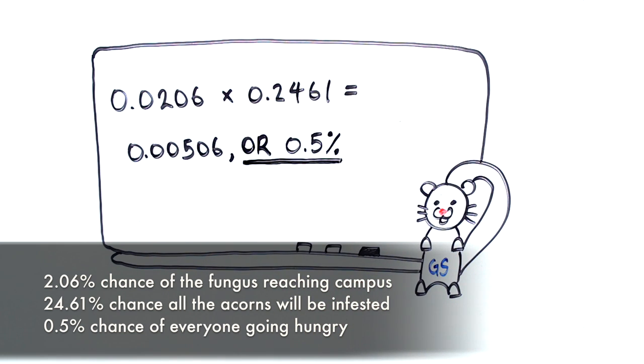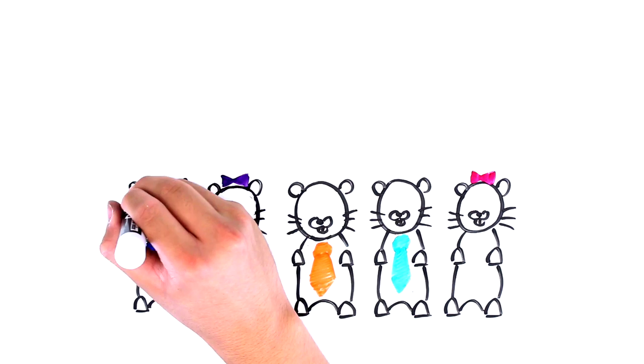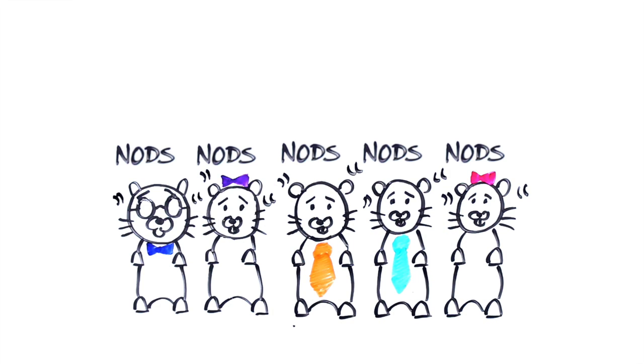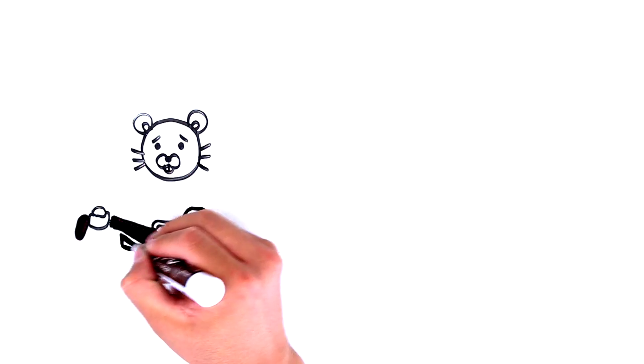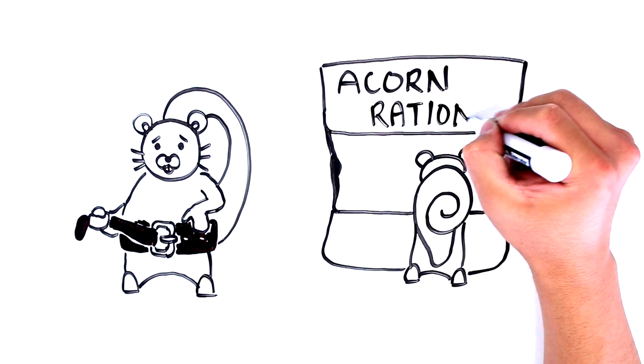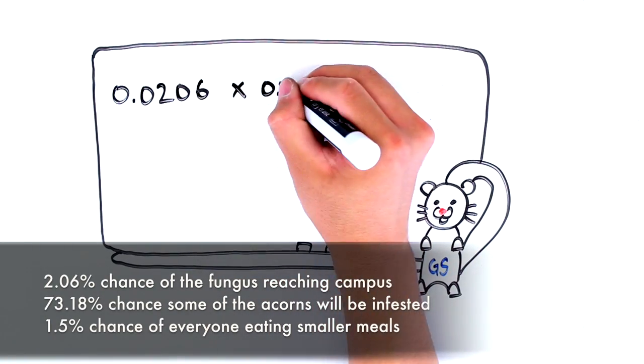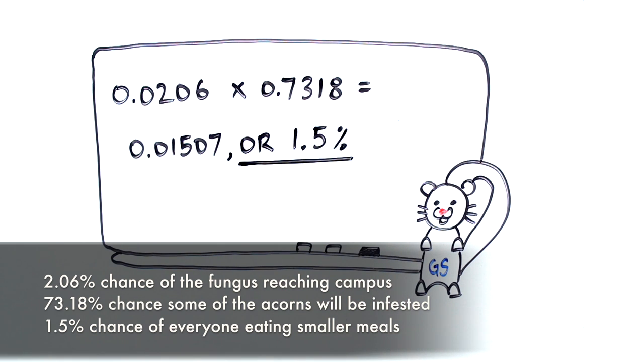Additionally, the 2.06 and 24.61 just added confusion. It would have been better to have just said about 2% and about 25%, which together gave a combined chance of about 0.5%. To be completely accurate, she should also have said that the chance of the squirrels having to tighten their belts when it came to mealtimes was actually about 1.5%. Because, if the fungus did reach the campus, there was then a 73% chance that it would infect some of the acorns.